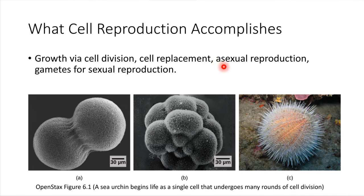Next on the list is asexual reproduction. This is the name for referring to how things like bacteria reproduce, as well as things like amoebas, which are an example of a eukaryotic single-celled organism. Essentially, you start off with one single cell and it divides in two, and in the end you have two organisms where you used to have one. There was no process of fertilization — no sperm cell had to fertilize an egg cell — so we call this asexual reproduction, meaning not sexual reproduction.